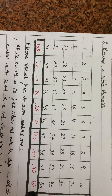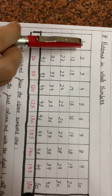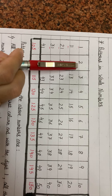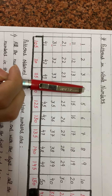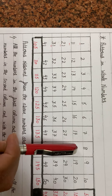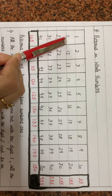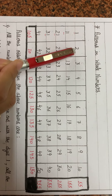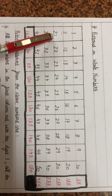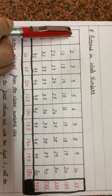The second pattern: in each row, the numbers increase by 1. Like here, 1 has 1 plus 1 equals 2, 2 has 3, 3 has 4 — so in each row, numbers increase by 1. If we look at the column: 1 to 11 — the gap is 10. 2 to 12 — again 10. 11 to 21 — again 10. 12 to 22 — again 10. So in each column, numbers increase by 10.